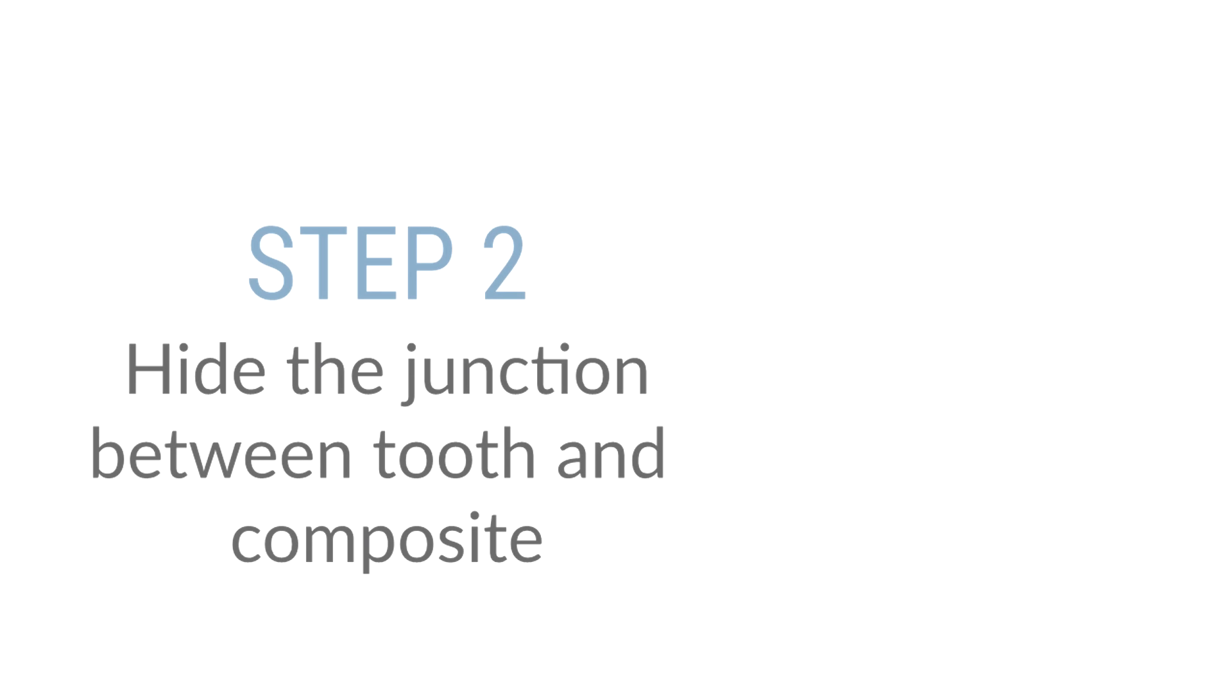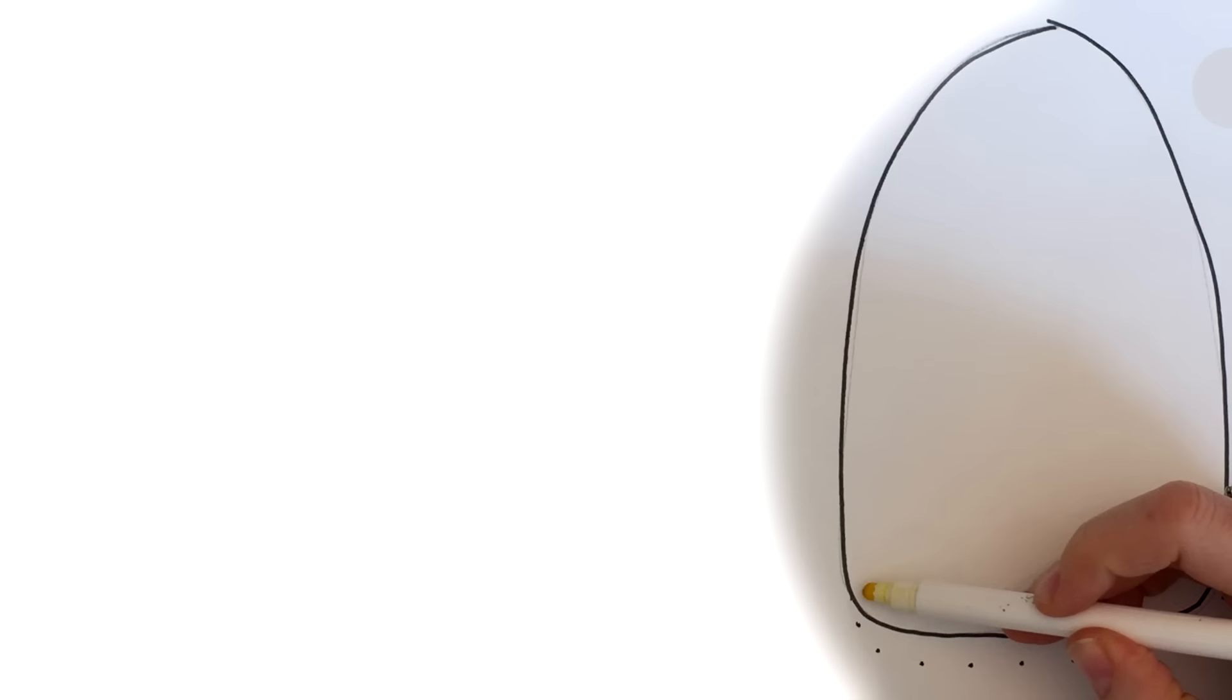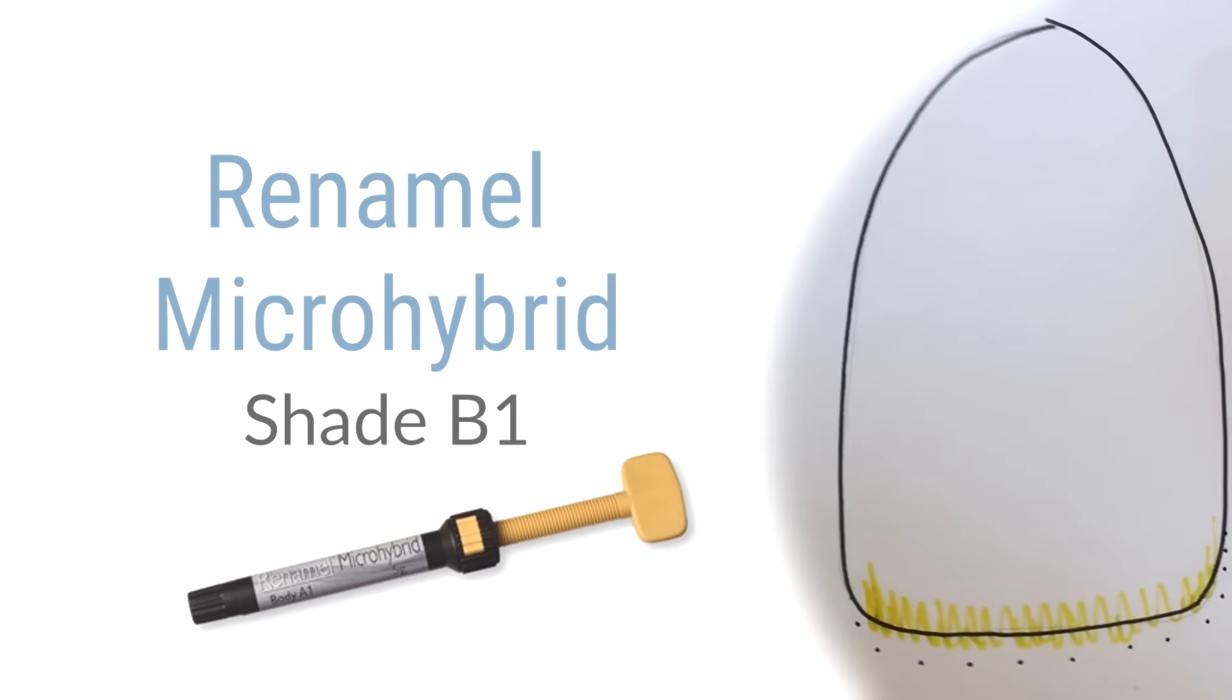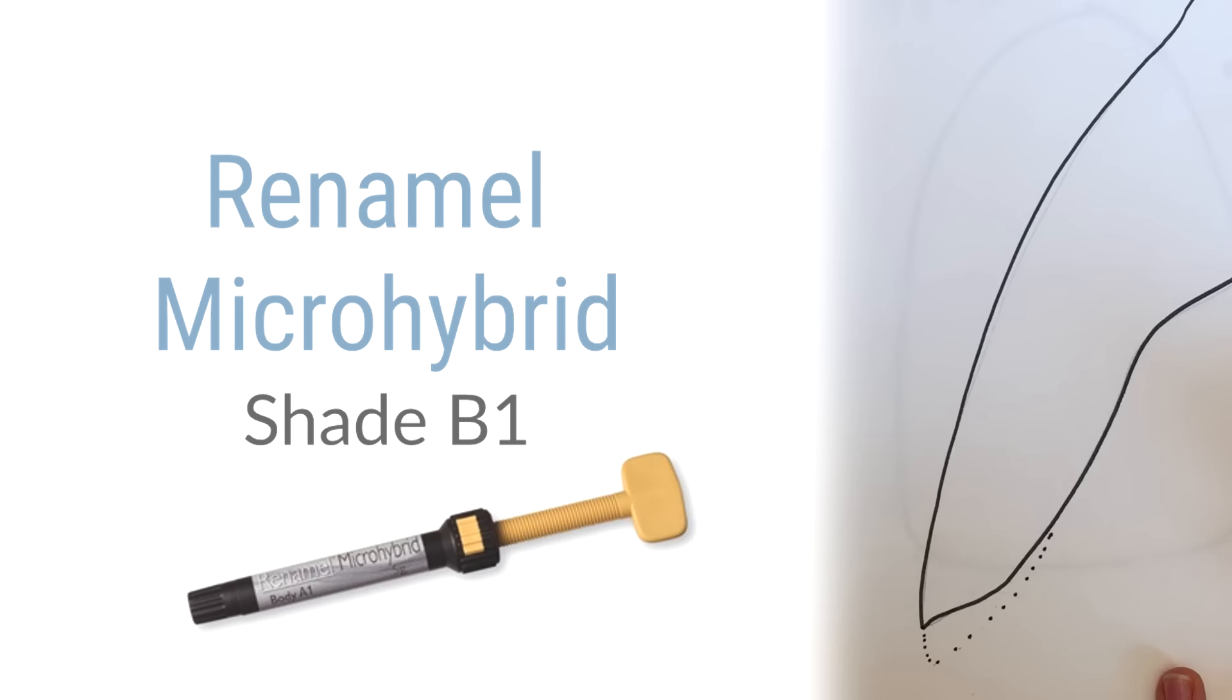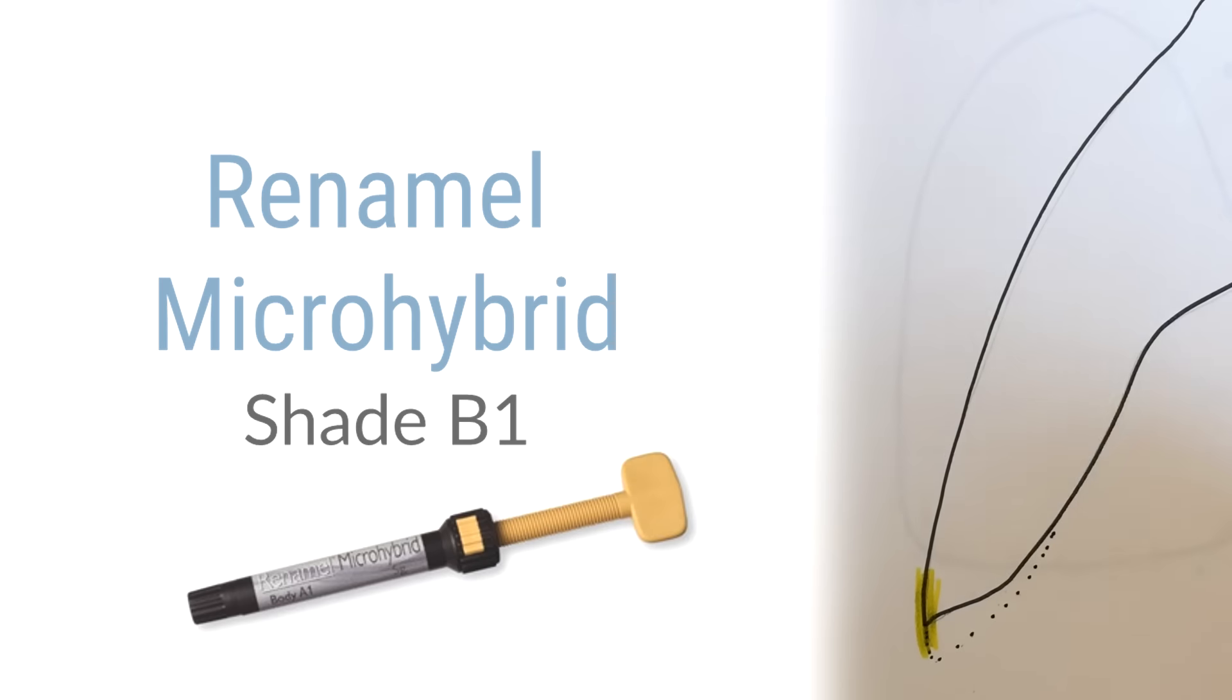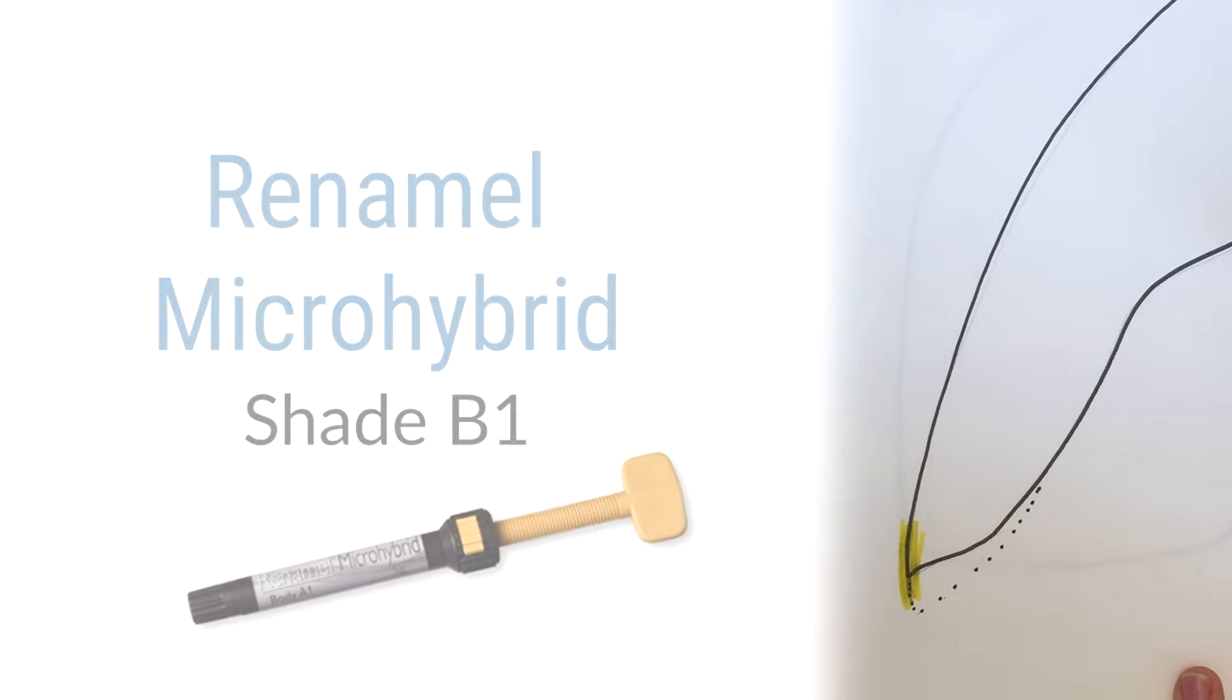Now the second step, in order to hide the junction between the tooth and the composite, I'm going to place some microhybrid B1 and I'm going to kind of erase the tooth composite junction with the hybrid that's a little bit more opaque and you can actually create a little bit of lobing here doing that also. And if we look at the lateral view, this is what it could look like just on the tip here, over the tooth and onto the occlusal clear.